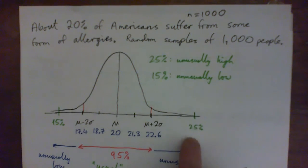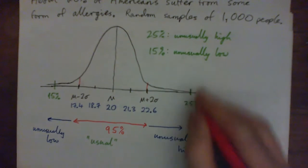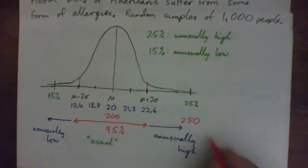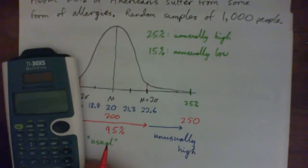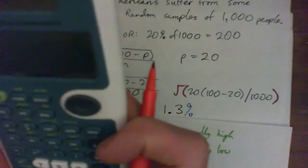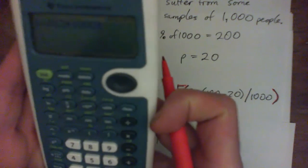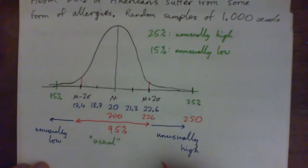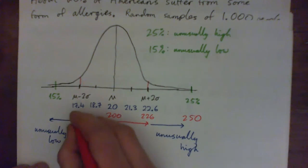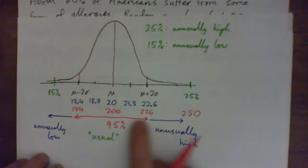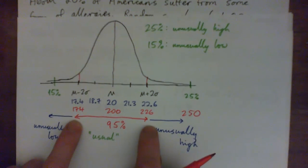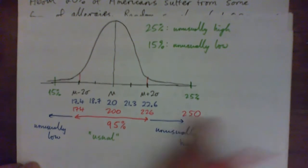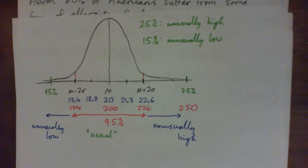Just to beat it to death: 25% of a thousand is 250 people. Looking at groups of a thousand, we expect about 200 people to have allergies. The standard deviation of 1.3% times 1000 is 13 people. So 200 plus 26 is 226 people, and 200 minus 26 is 174 people. Out of groups of a thousand, we expect 200 give or take 26 to have allergies. Anything less than 174 or more than 226 out of a thousand is unusual.